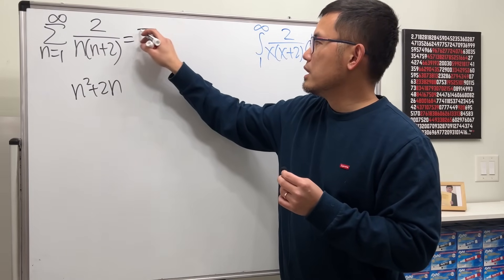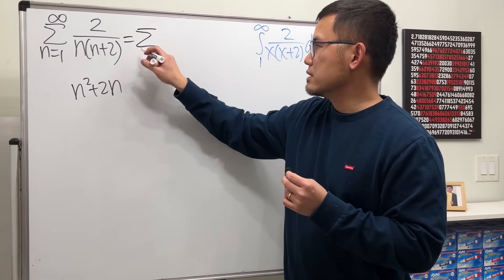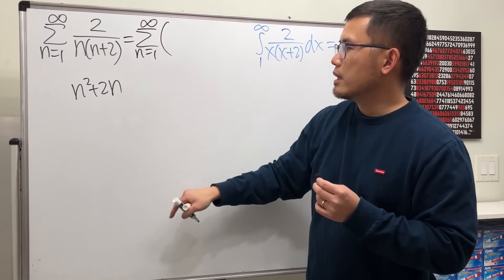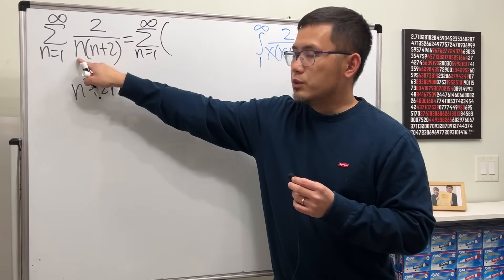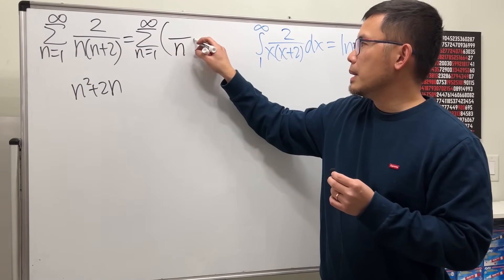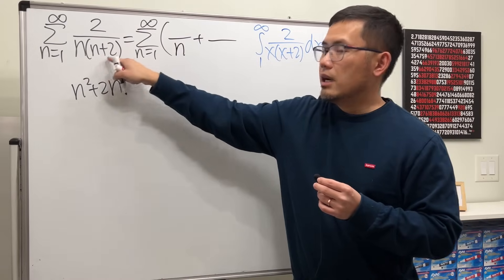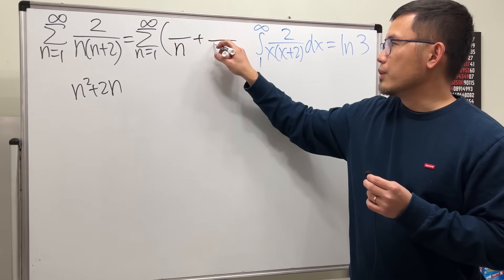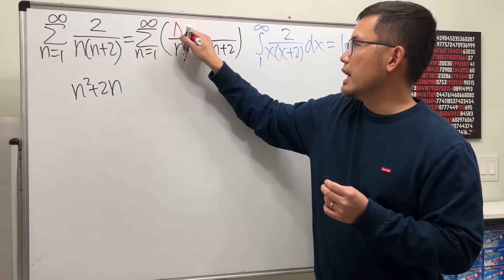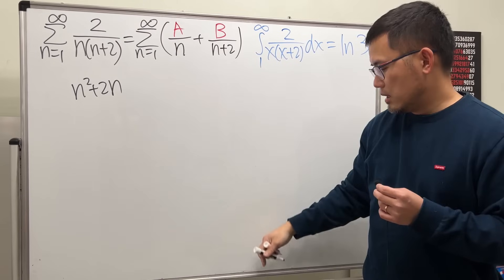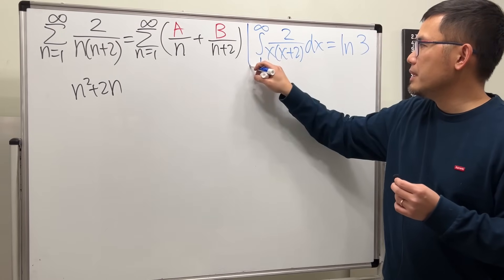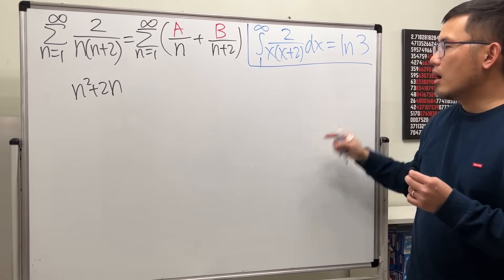So this will be the series as n goes from 1 to infinity. We have some number A over n, plus B over n plus 2 for the second denominator. Let's call these A and B, and we will figure out what A and B are.